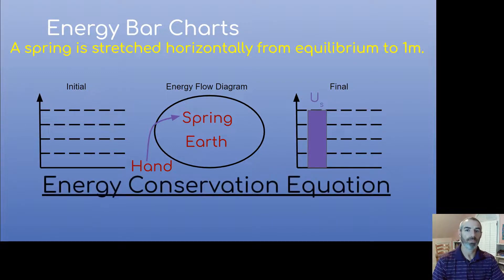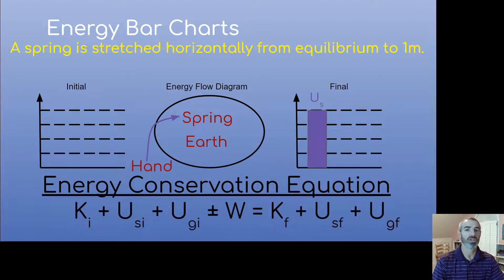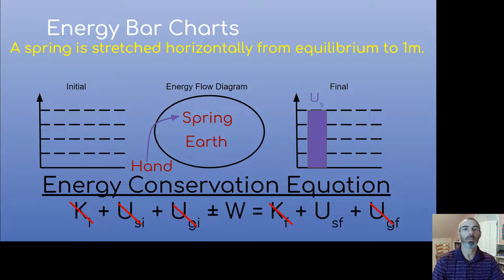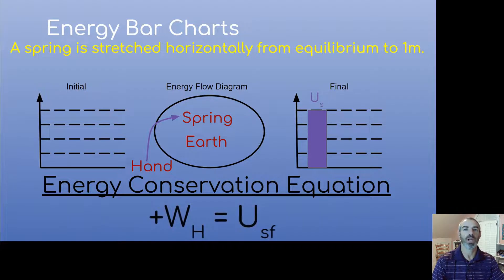Writing the conservation equation, we start with the long equation with all the mechanical energies and work. We know there's no mechanical energy in the beginning and only stored spring energy in the final, which means there's going to be work. The hand is transferring energy into the system, so that's a positive value of work — plus W. I put a subscript on work to show what object is applying it, so the work done by the hand equals the stored energy in the spring in the final situation.